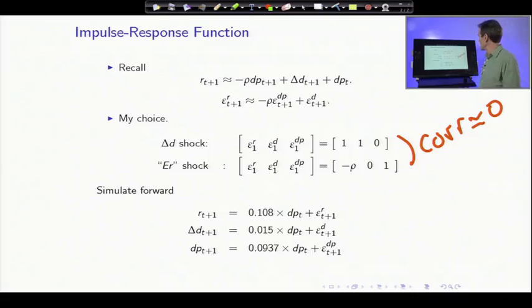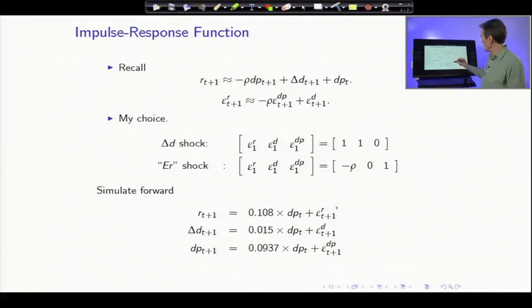So now our job is pretty simple. We've decided on the two shocks. We're going to hit the system first with return and dividend, with these two shocks going up by one, leaving dividend yields alone, and watch the dynamics evolve.